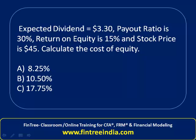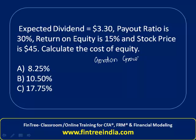The question gives us an expected dividend, meaning we are looking at D1. The payout ratio, return on equity, and stock price are given. We have been asked to calculate the cost of equity, which can be calculated using the Gordon Growth Model.